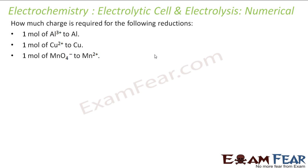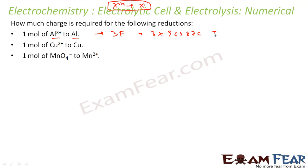The next question: how much charge is required to reduce 1 mol of Al³⁺ to Al? In this case, 3F charge will be required, and 3F is nothing but 3 × 96,487 coulombs. Similarly, for Cu²⁺ to copper, 2 Faraday charge is required — 2 × 96,487 coulombs.